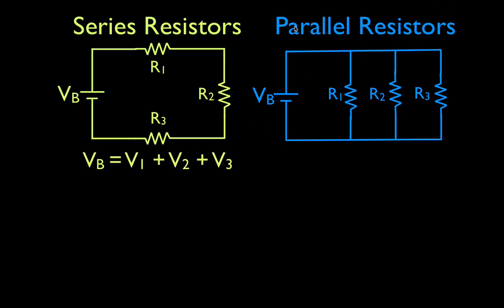The voltage rule for series resistors states that the voltage gain from the battery is equal to the sum of the voltage drops across each of the resistors. So the voltage from the battery is equal to the voltage drop across the first resistor plus the voltage drop across the second resistor plus the voltage drop across the third resistor. The battery is what gives our electrons energy; the resistors are what use that energy.